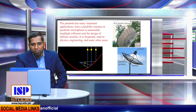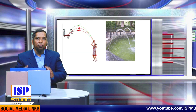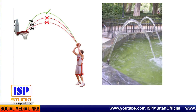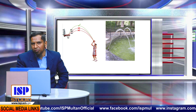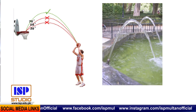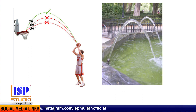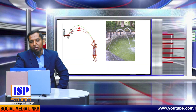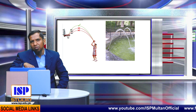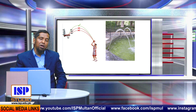Another application: in basketball, when a person throws the ball into the basket successfully, the ball follows a parabolic path. Similarly, the water flow from a fountain also follows a parabolic form. There are many more applications of parabola in nature and daily life, but in the limited time available I cannot explain each one in detail.